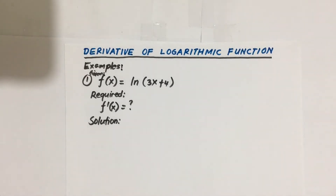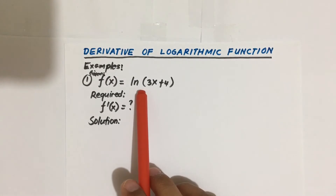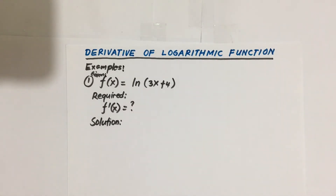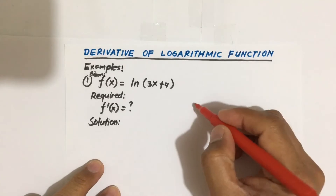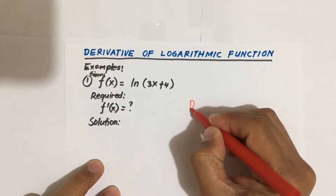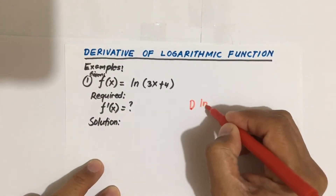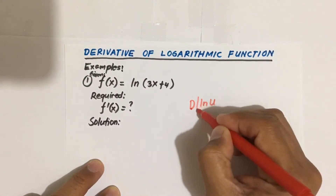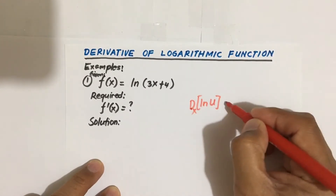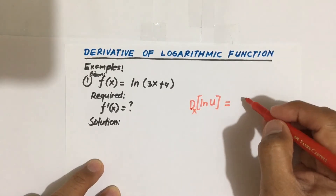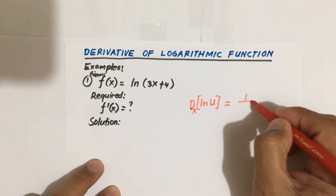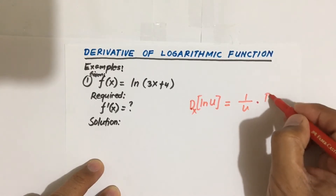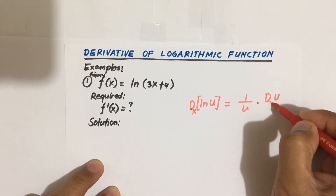Before we do the solution, let us recall first the formula. Since we are given ln, we use the formula: the derivative of ln(u) with respect to X is equal to 1 over u, times the derivative of u with respect to X.